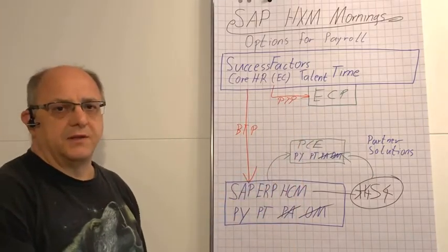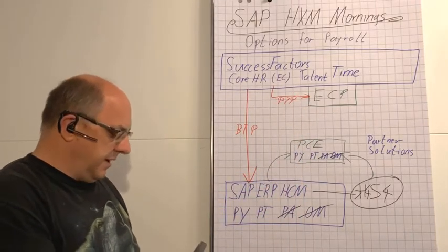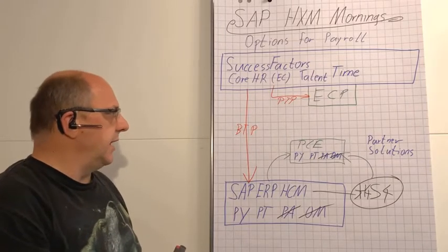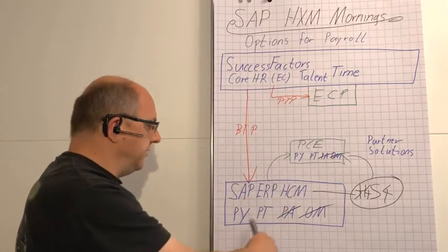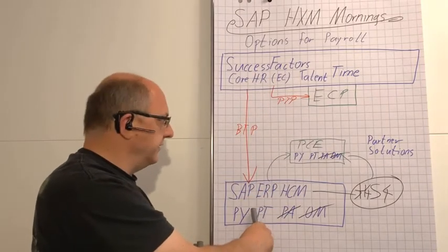The problem with the Employee Central Payroll is it doesn't have a time and attendance solution in it, but it doesn't really make sense for you to use the Employee Central Payroll in the cloud with core HR in the cloud and then with the on-premise time and attendance.